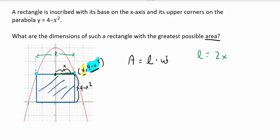Notice the length of my rectangle would be twice the x value. x represents this distance right here. But because this parabola has some symmetry, this distance is also x. So the total length L would be x plus x or 2x. So in my area formula, I'm going to replace L with 2x.